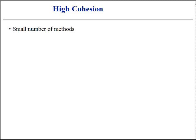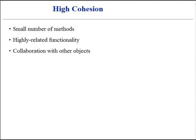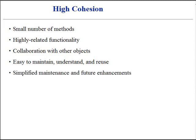A class with high cohesion has a relatively small number of methods and demonstrates highly related functionality. The class does not do too much work — it collaborates with other objects in order to share the effort if the task is too large for just a single object. A class with high cohesion is advantageous because it is relatively easy to maintain, understand, and reuse elsewhere. The high degree of related functionality combined with a small set of operations simplifies maintenance and future enhancements, and also supports increased reuse potential.